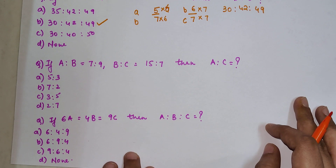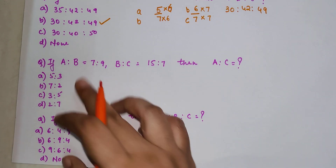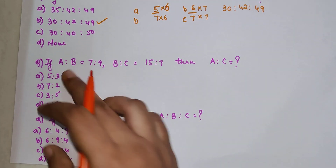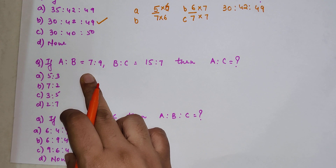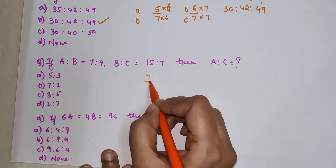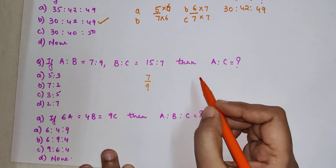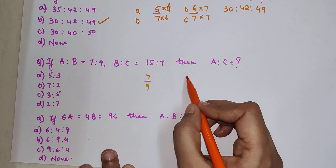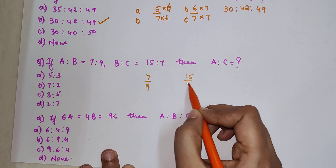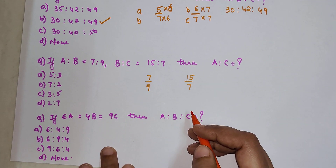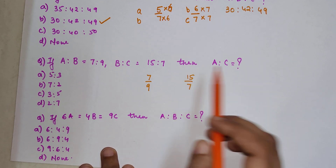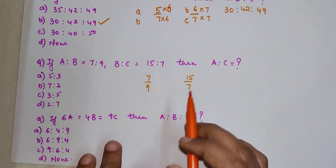The next one is a bit different because here they have given A is to B which is 7 upon 9, and B is to C which is 15 upon 7, and we need to find what A is to C.